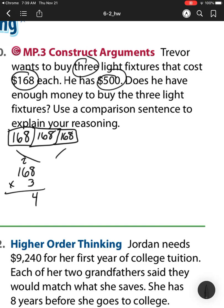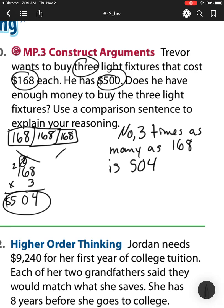3 times 4 is 24. Regroup. 3 times 8 is 16. Plus that 2 is 20. Regroup that 2 from 20. 3 times 1 is 3. Plus 2 is 5. So he would need $504. So I'm going to say no. 3 times as many as 168 is 504. He would be $4 short.